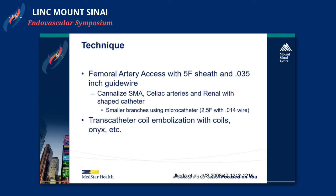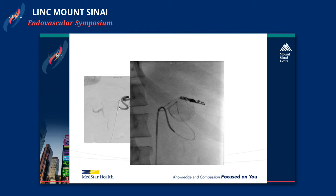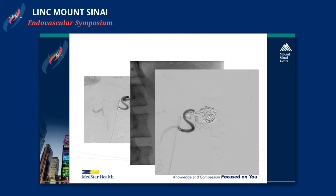The usual technique: most of us do femoral access with a 5 French sheath, and then we'll cannulate the SMA, celiac, or renal depending on what we're treating. We may use a microcatheter and then do whatever therapy we had planned. This was a lady I took care of — the aneurysm measured about 2.5 centimeters. She was about 50 and said she wanted to have children, so we decided to treat it. We got a microcatheter all the way out, got into the outflow tract, coiled that, and then coiled the aneurysm sac. There is some discussion about whether you need to embolize the entire sac or just get the inflow and outflow. People have different views because the more coils you put, the more expensive it gets, and it can also be difficult observing them postoperatively.